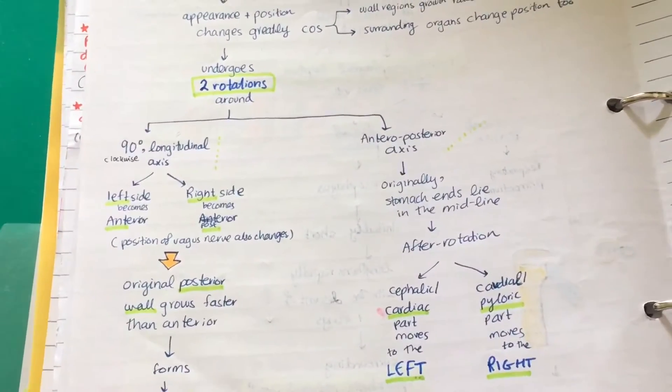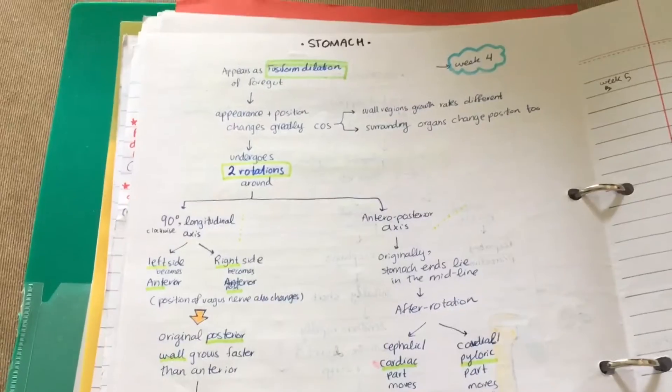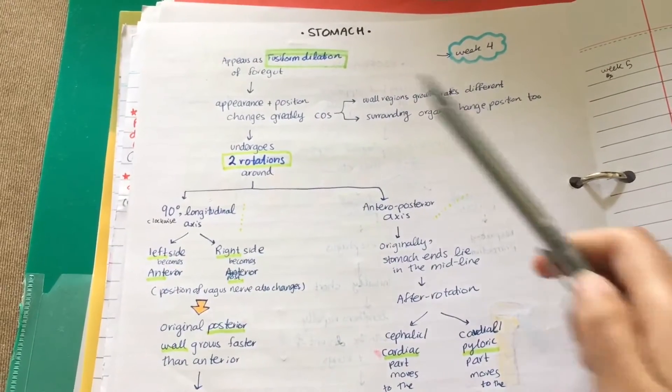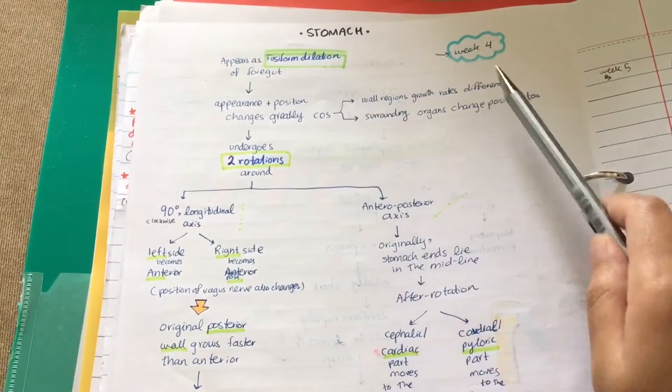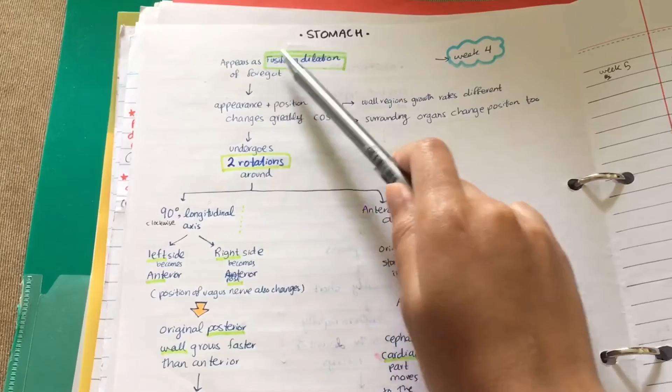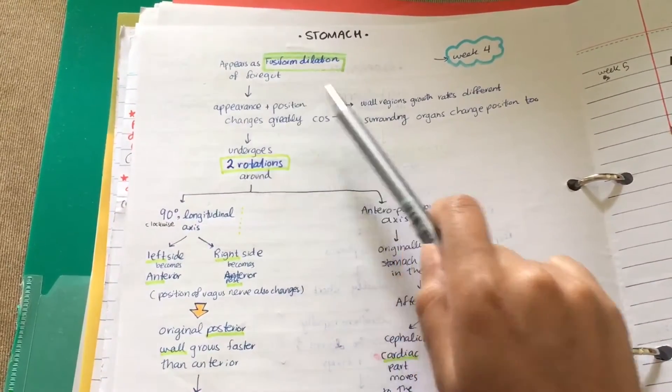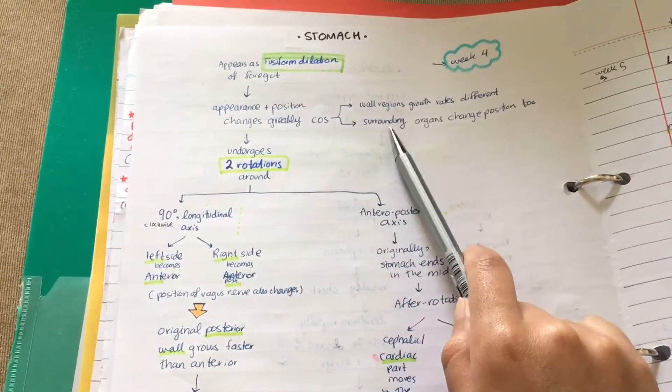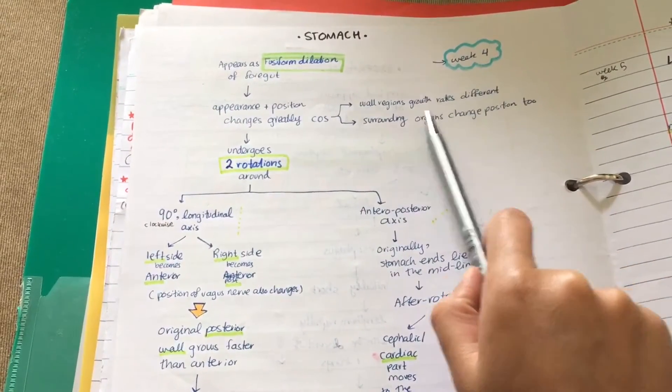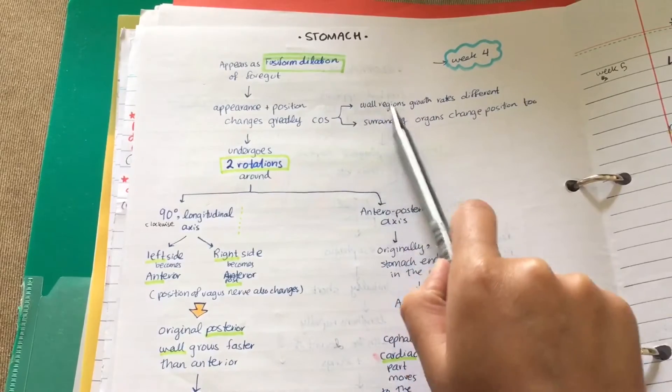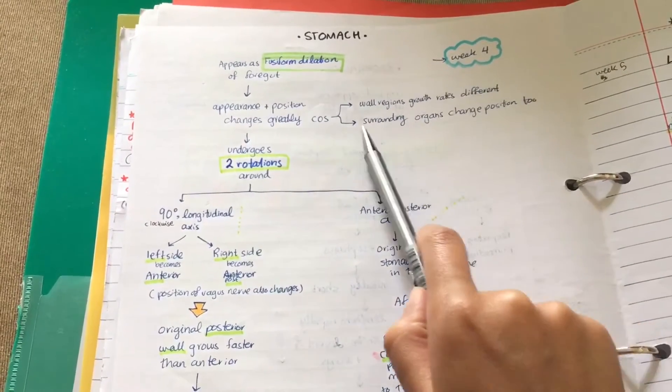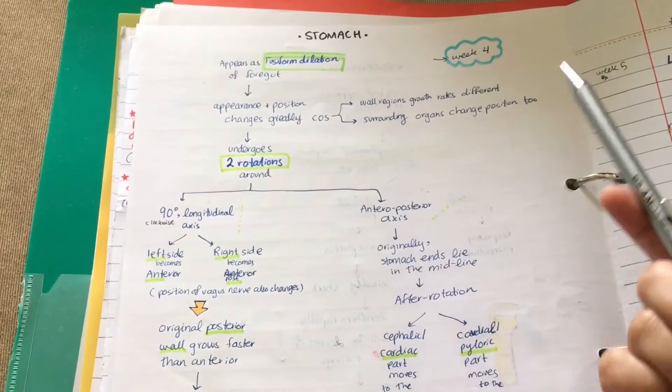The stomach at about four weeks appears as a fusiform dilation of the foregut. Its appearance and position change greatly because of two reasons: number one, the growth rates of the wall regions are different, and the surrounding organs are changing position as well.